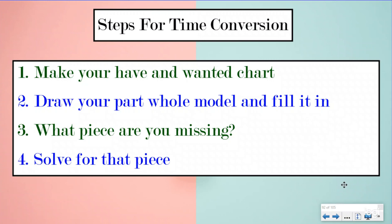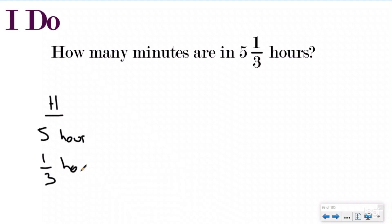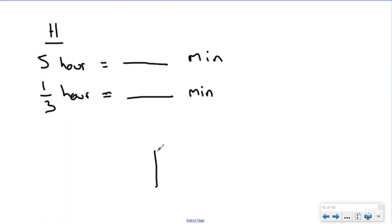We're also going to be using fractions today in our time conversions, because our last lesson in our time unit we talked about fractions of an hour. So the first question is: how many minutes are in five and one-third hours? My first step is to make a have and wanted chart. I have five hours and then I also have one-third of an hour. I'm going to split that fraction and whole number apart, and I want to know how many minutes that is. I need to figure out how many minutes are in five hours and then how many minutes would be in one-third of an hour.